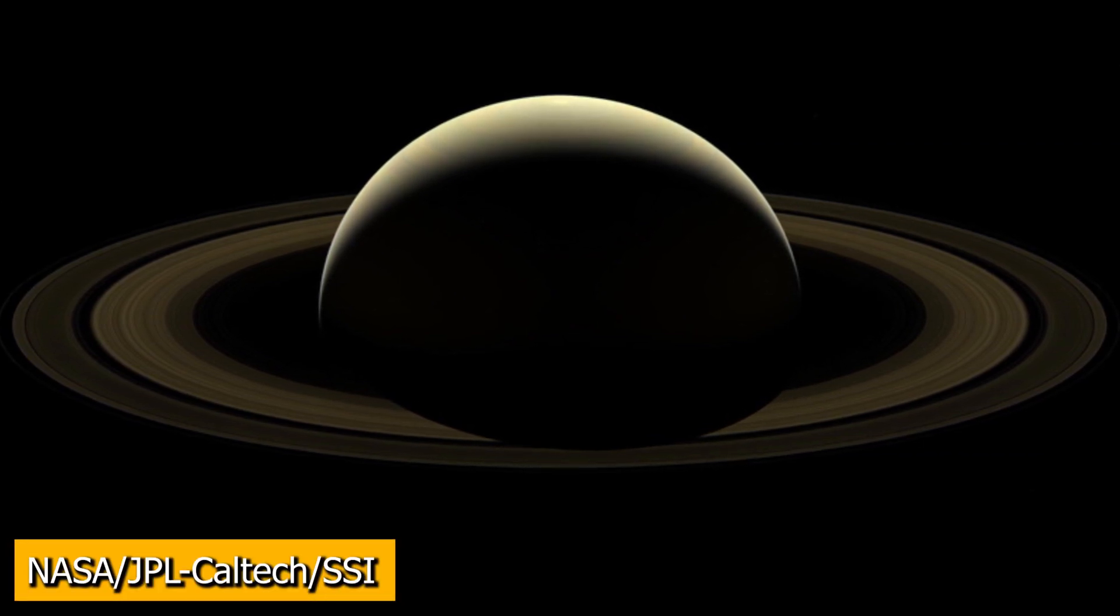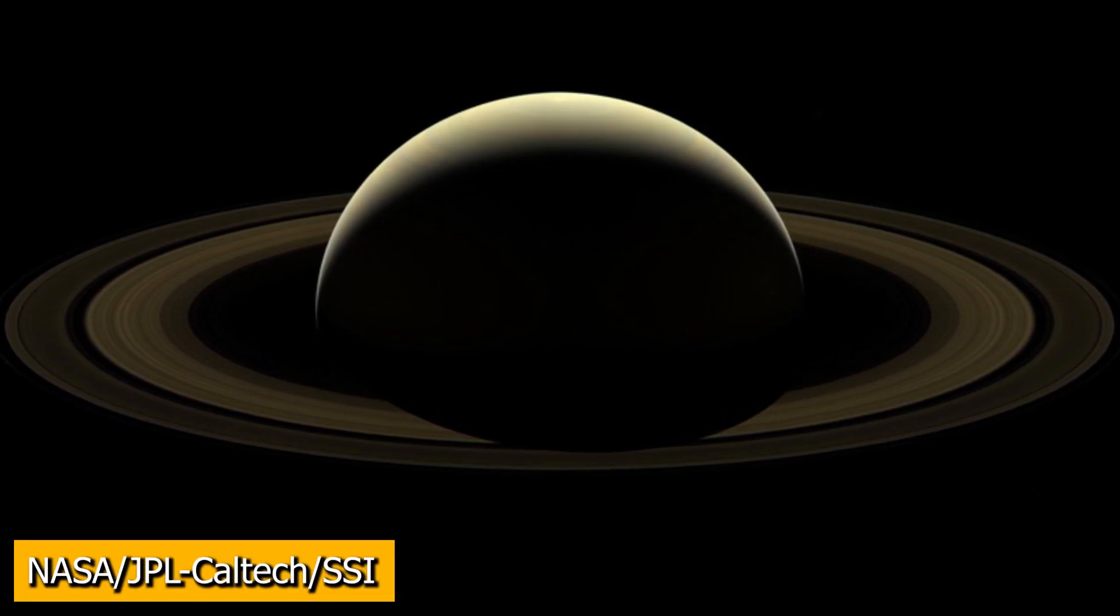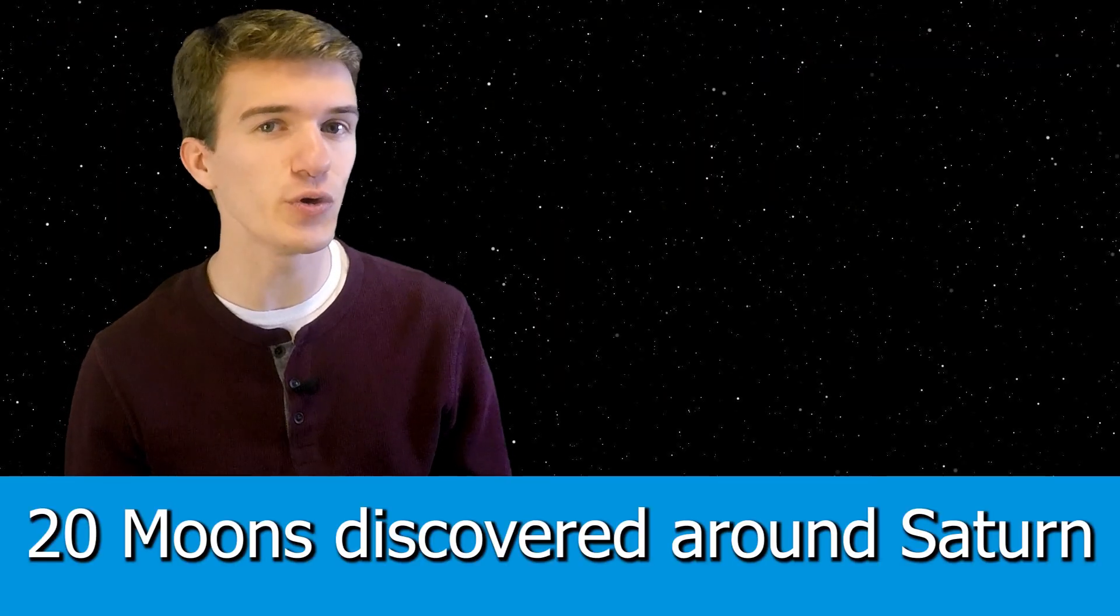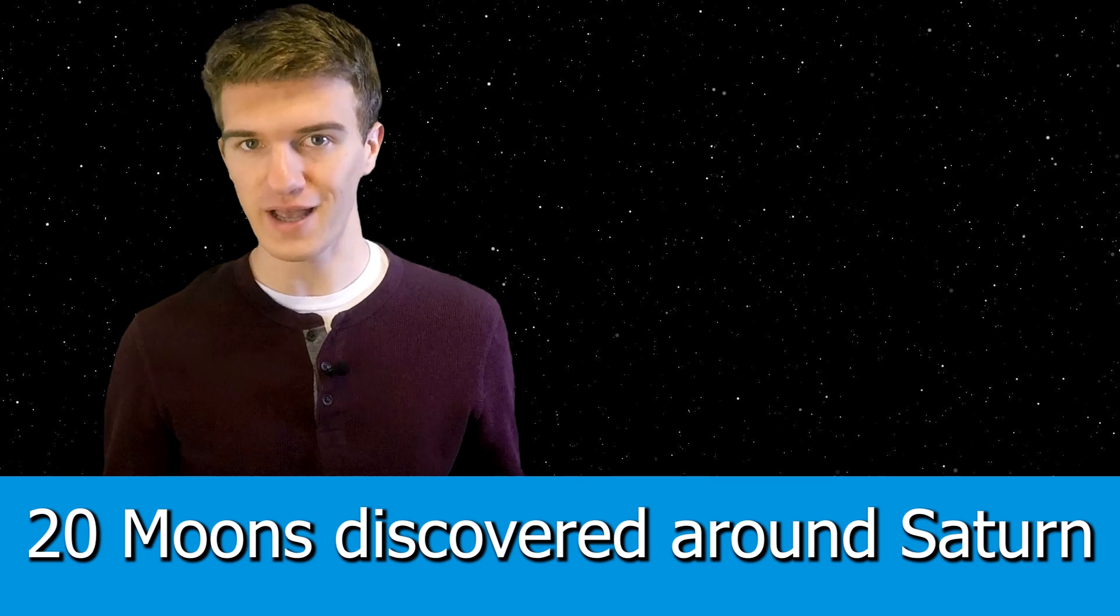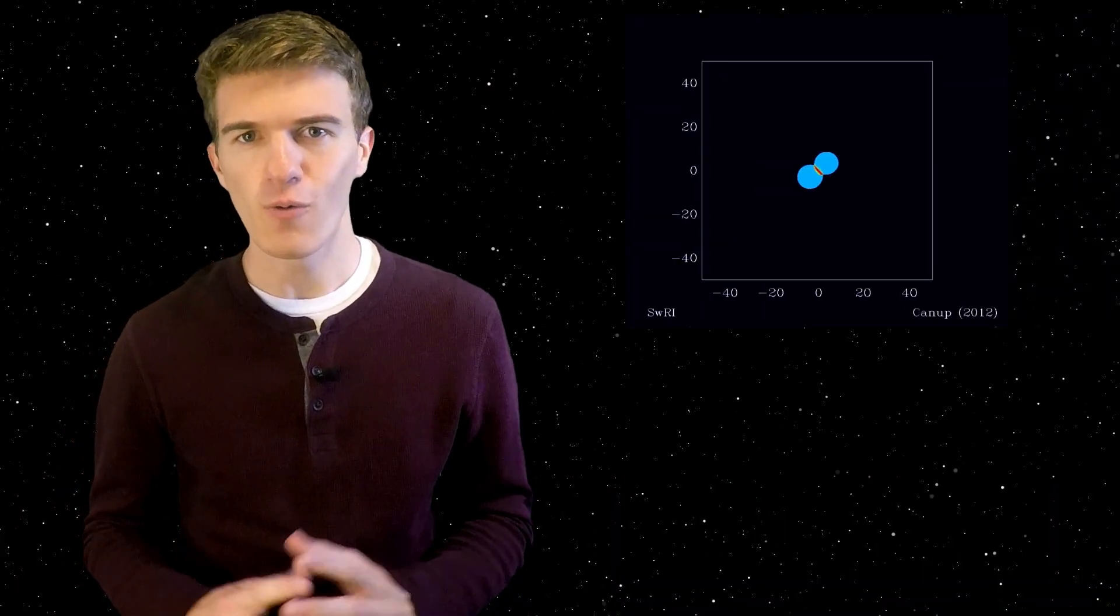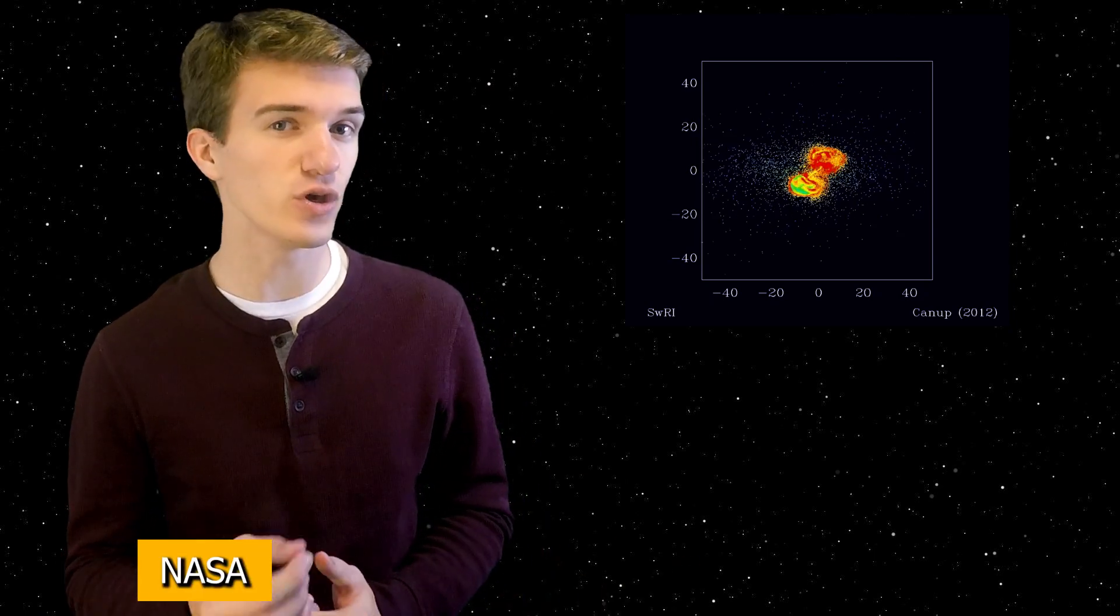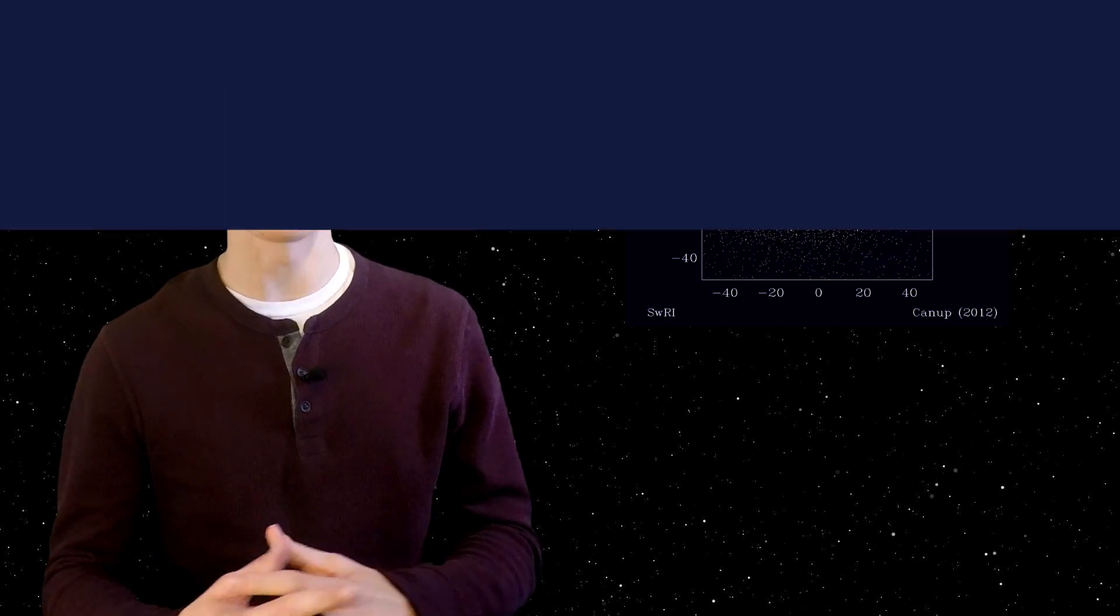A team at the Carnegie Institution of Science has recently made a discovery around Saturn. They were able to detect 20 new moons around the ringed planet. In this video, we're going to talk about some of those moons, what makes them unique, how they were able to discover them, as well as how you might be able to name some of these moons.